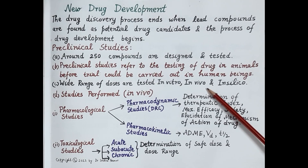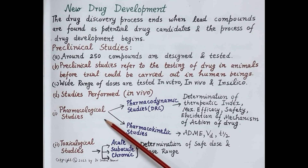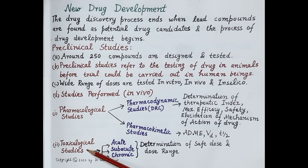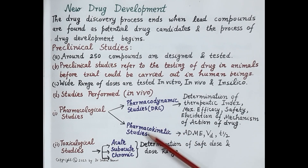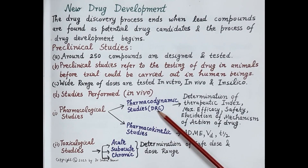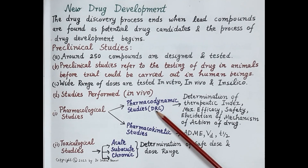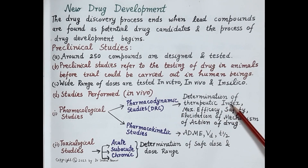Mainly two types of studies are performed in animals in vivo: pharmacological studies and toxicological studies. Pharmacological studies include pharmacodynamic studies and pharmacokinetic studies. In pharmacodynamic studies, the dose-response relationship is studied — the drug is administered systemically, dose-response curves are plotted, and the therapeutic index of the drug is determined.